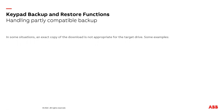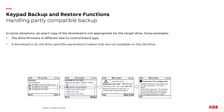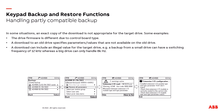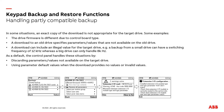Handling partially compatible backups: in some situations, an exact copy of the download is not appropriate for the target drive. Some examples are the drive firmware is different due to the control board types, or a download to an old drive where specified parameters are not available. A download can include illegal values for a target drive — for example, a backup from a small drive that can have a switching frequency of 12 kilohertz, whereas a bigger drive can only handle 8 kilohertz. As default, the control panel handles these situations by discarding parameters not available on the target drive, using parameter default values when the download provides no value or invalid values, and providing warnings on how to fix the information.